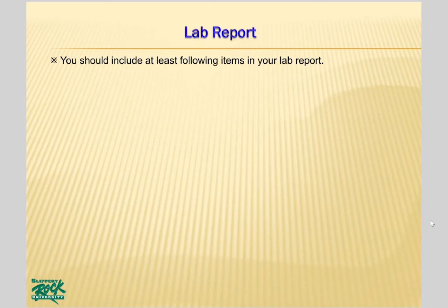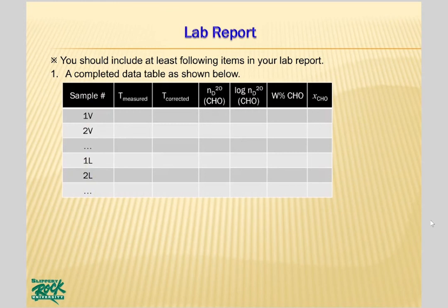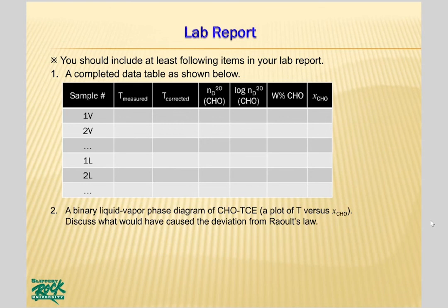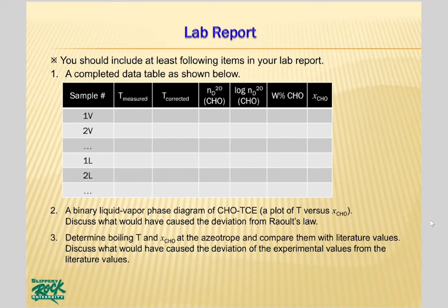Your lab report should include at least the following items. Number 1: a completed data table. Number 2: a binary liquid vapor phase diagram of cyclohexanone and tetrachloroethane — a plot of temperature versus mole fraction of cyclohexanone — and a discussion of what caused the deviation from Raoult's Law. Number 3: determine the boiling temperature and mole fraction of cyclohexanone at the azeotrope, compare them with literature values, and discuss what caused the deviation of experimental values from literature values.